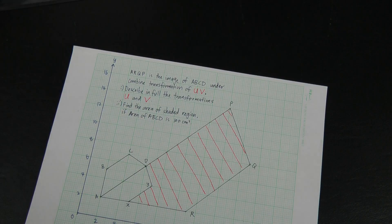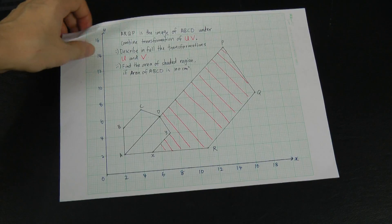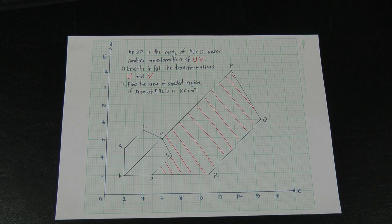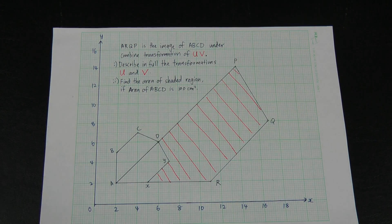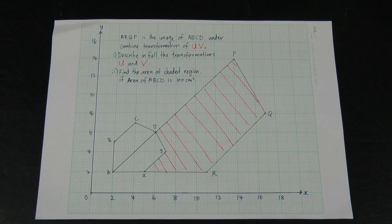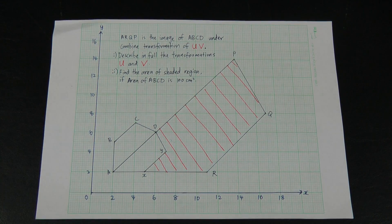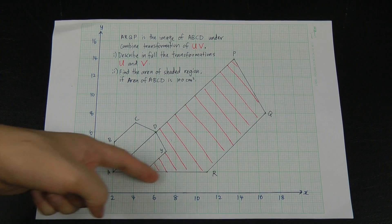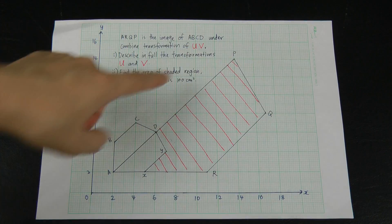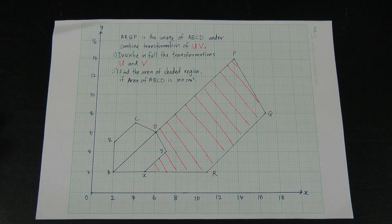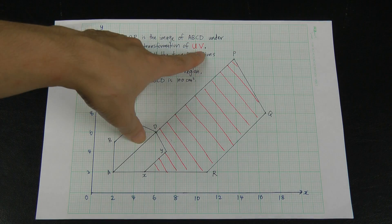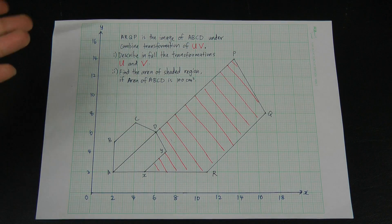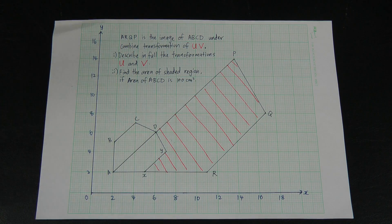Let's look at this new example — let me zoom in a bit, since some of you are watching on your phone. For this question, you can find that ARQP is the image of ABCD under the combined transformation UV. The question asks you to describe in full the transformations U and V, so before you start you have to analyze the question.